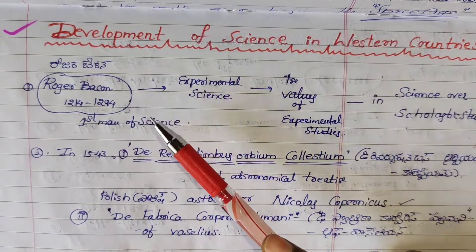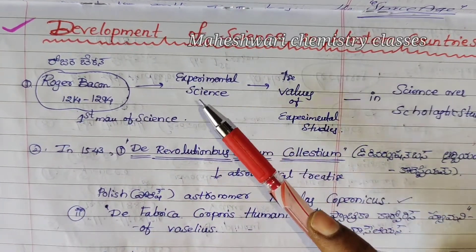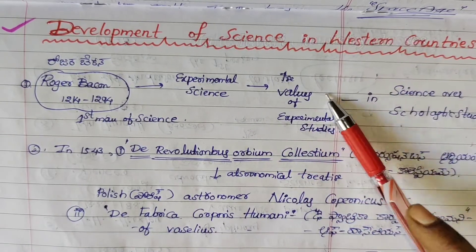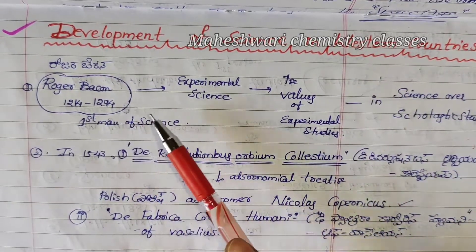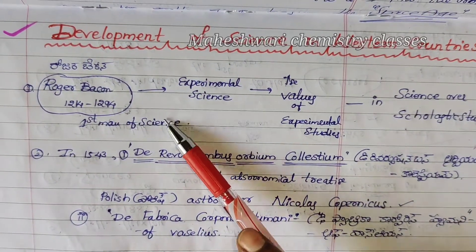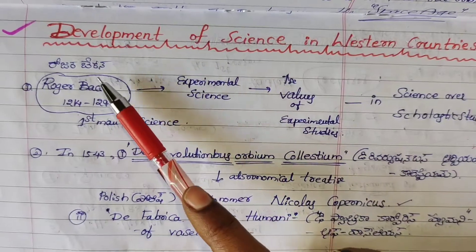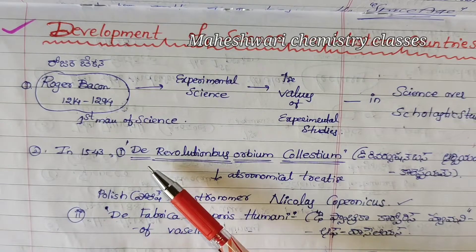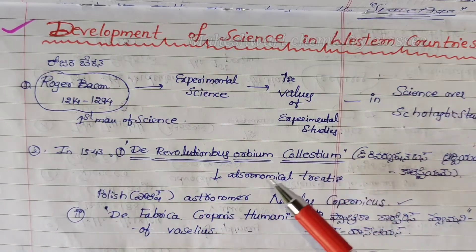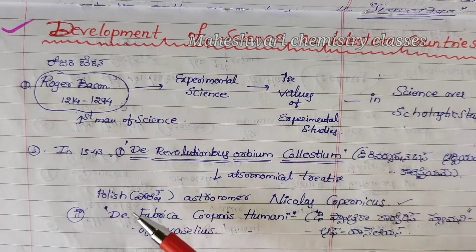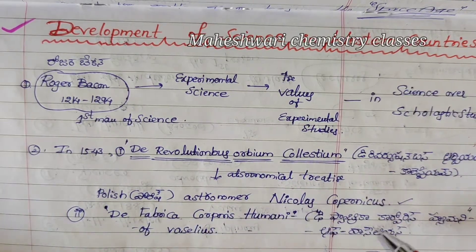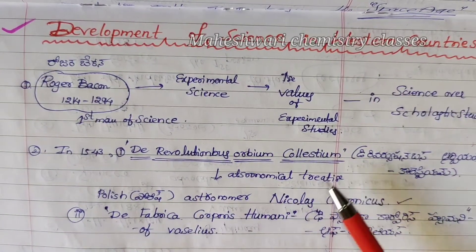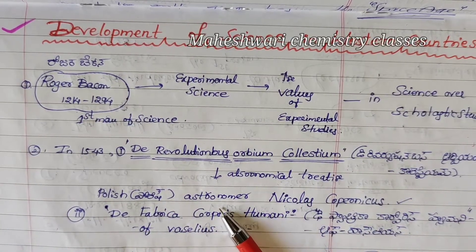Roger Bacon developed science and experiments. Next, there is an astronomical treatise written by Polish astronomer Nicholas Copernicus, which has been published by Copernicus.